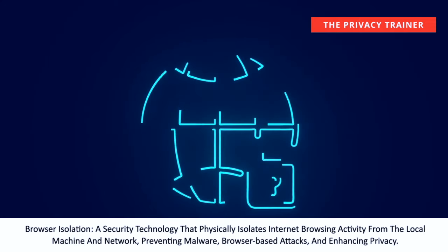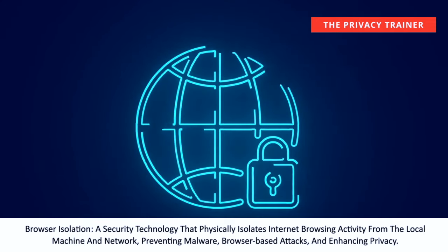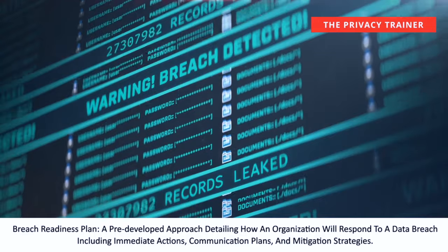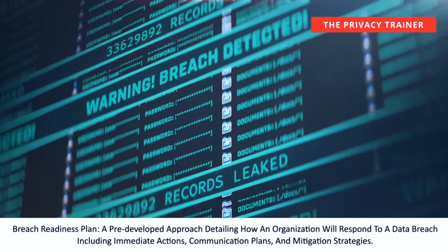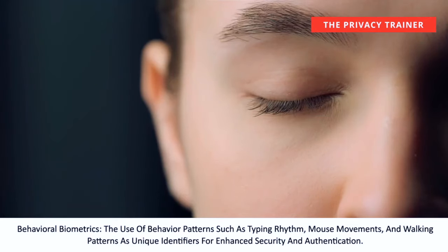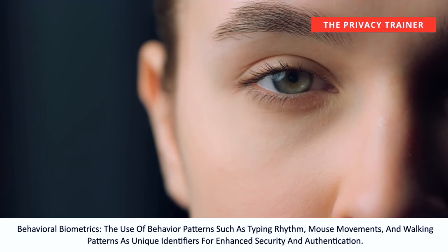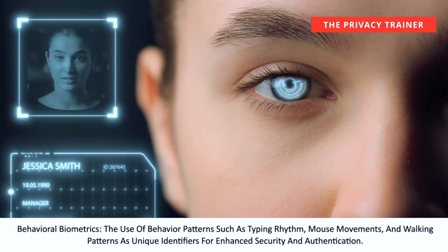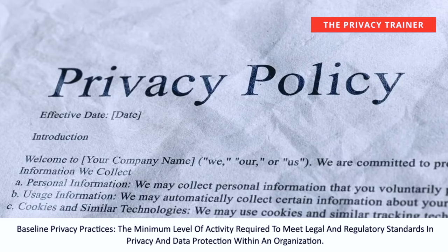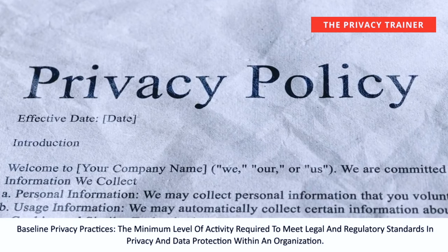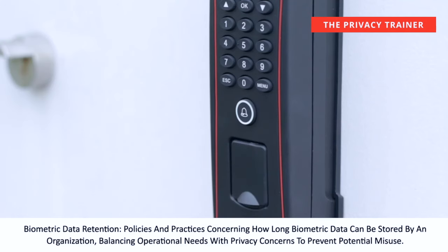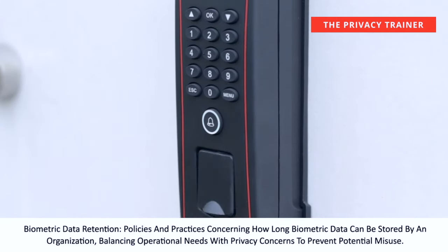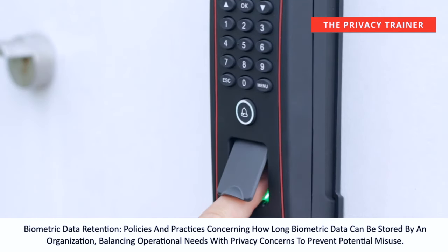Browser Isolation. A security technology that physically isolates internet browsing activity from the local machine and network, preventing malware, browser-based attacks, and enhancing privacy. Breach Readiness Plan. A pre-developed approach detailing how an organization will respond to a data breach, including immediate actions, communication plans, and mitigation strategies. Behavioral Biometrics. The use of behavior patterns such as typing rhythm, mouse movements, and walking patterns as unique identifiers for enhanced security and authentication. Baseline Privacy Practices. The minimum level of activity required to meet legal and regulatory standards in privacy and data protection. Biometric data retention. Policies and practices concerning how long biometric data can be stored by an organization, balancing operational needs with privacy concerns.